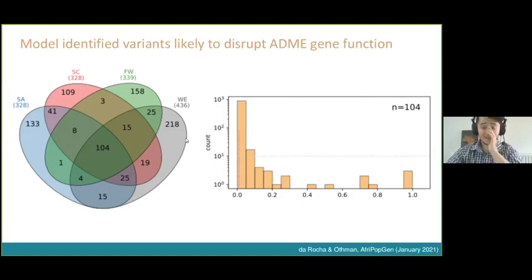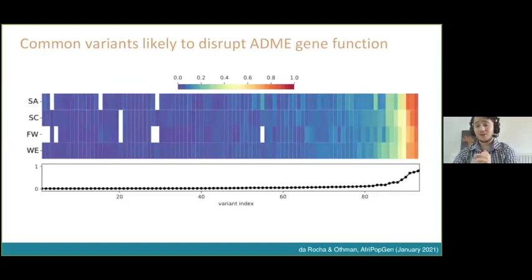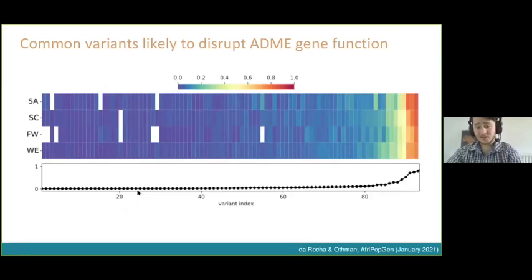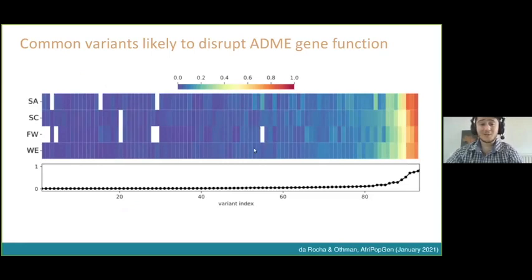We found there's quite a high degree of variability in variants that might impact ADME gene function. Looking at common variants — those more than 1% allele frequency shared between all four groups — we found that at the rare end, there's a lot of spottiness. Variants might be in one or two groups and not another. Even at common stages, for example, there's a variant in Southern African populations at around 20% frequency that's completely absent from Far West Africans. It's not a homogeneous distribution; a variant might be more relevant in a particular African cluster than in others.